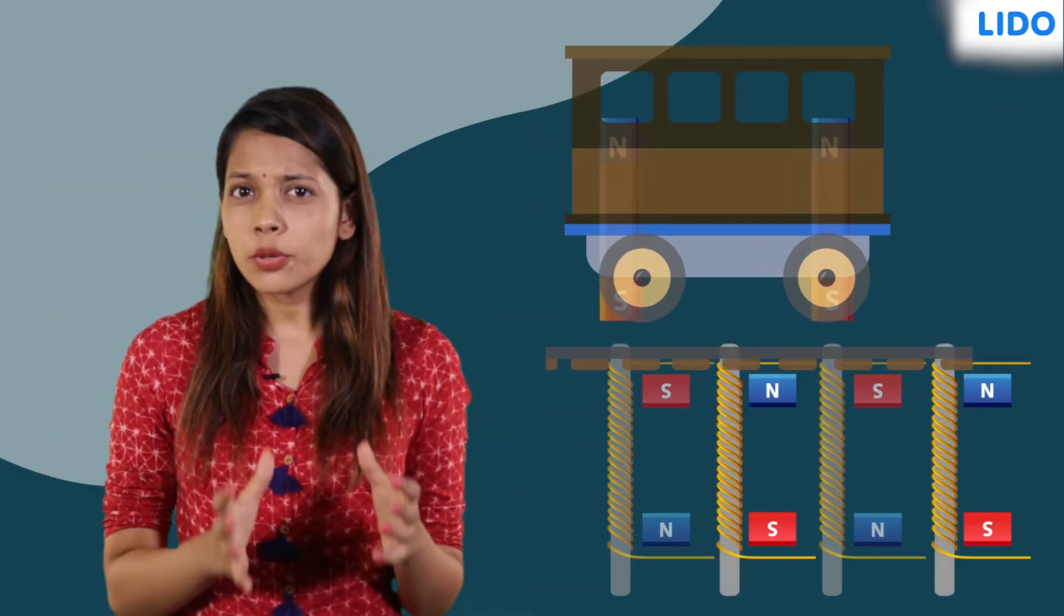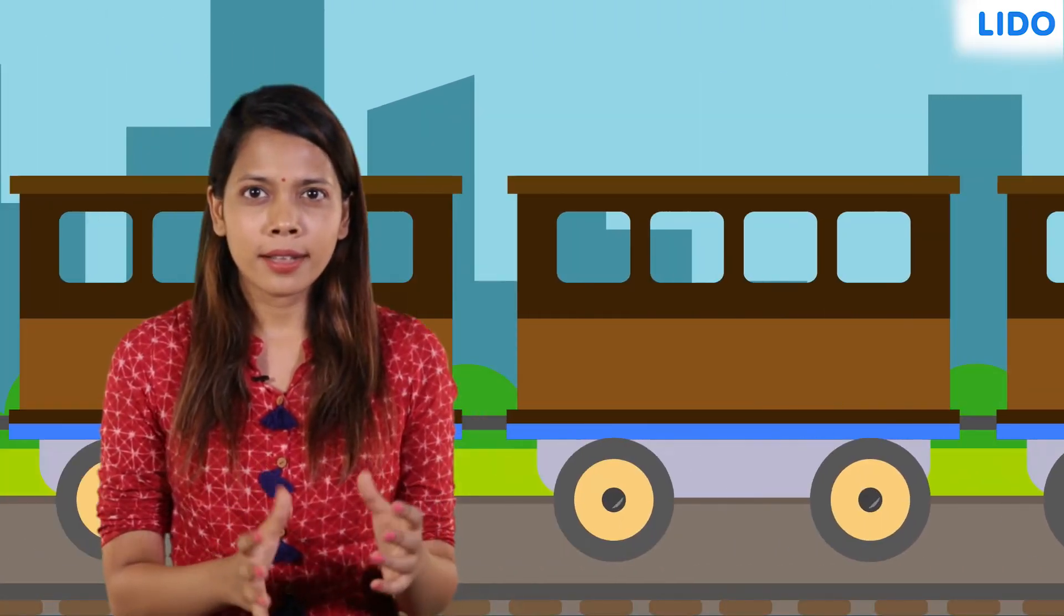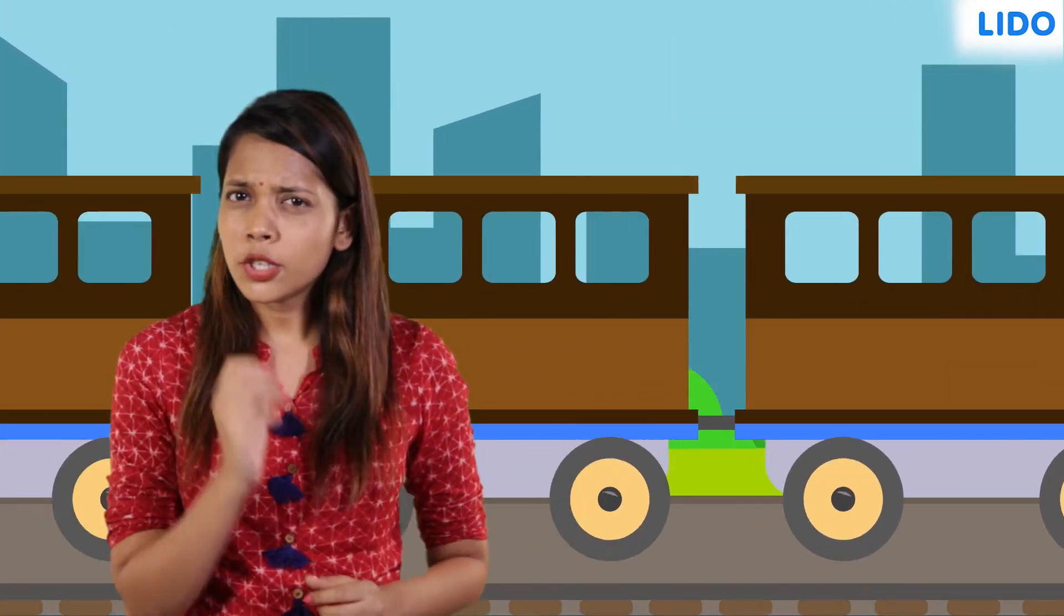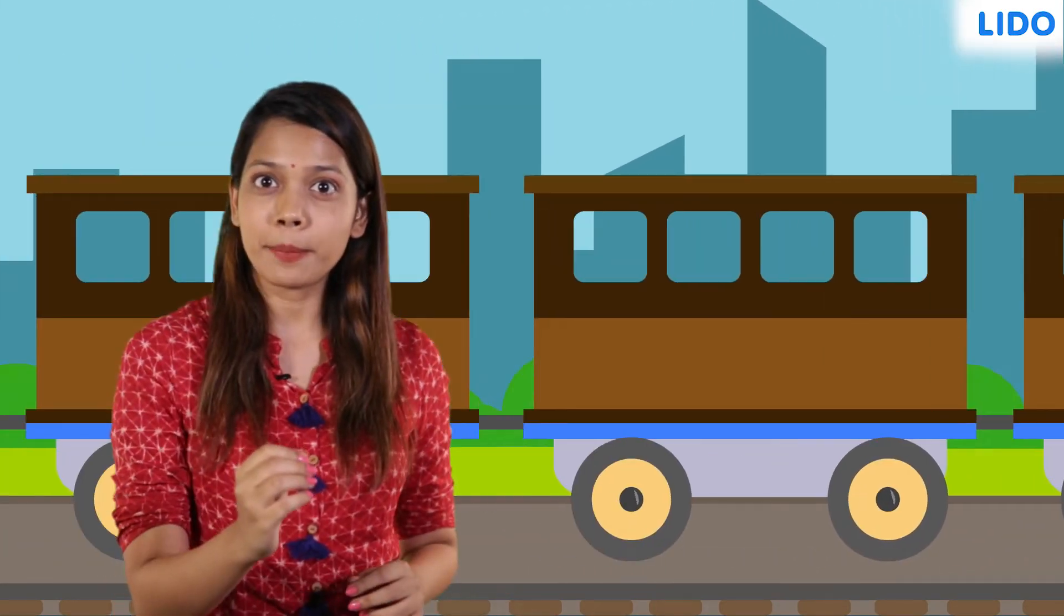While the other set is used to move the floating train ahead at great speed. Since the two surfaces don't touch each other, there is no friction and the train can travel at high speeds.